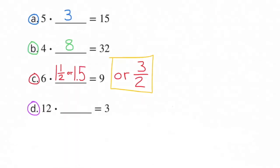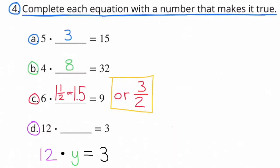D: 12 times what number equals 3? That's the same as the equation 12 times y equals 3, y being the unknown number.